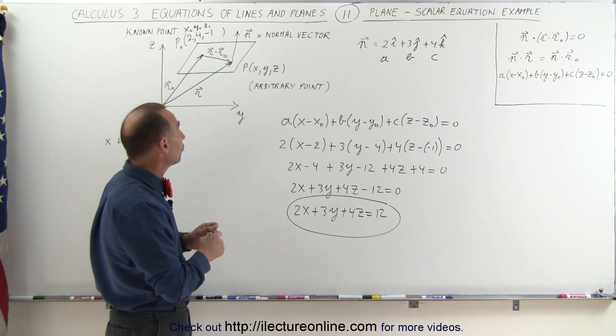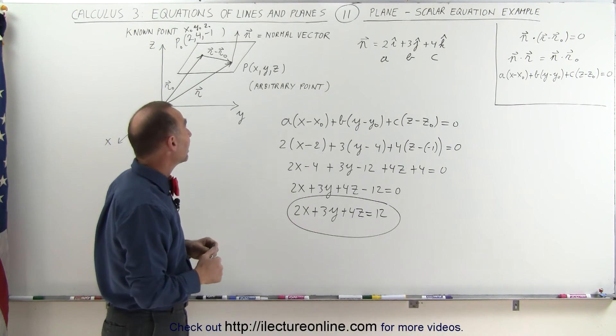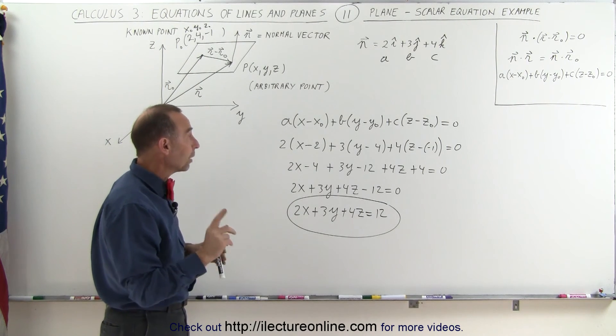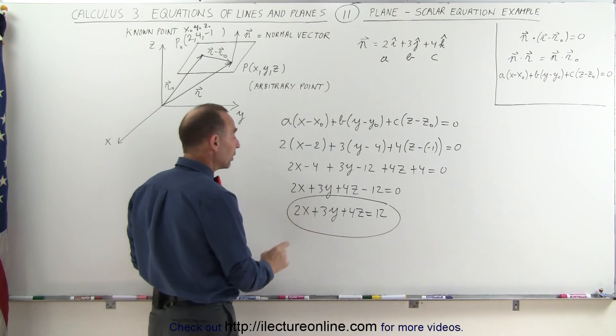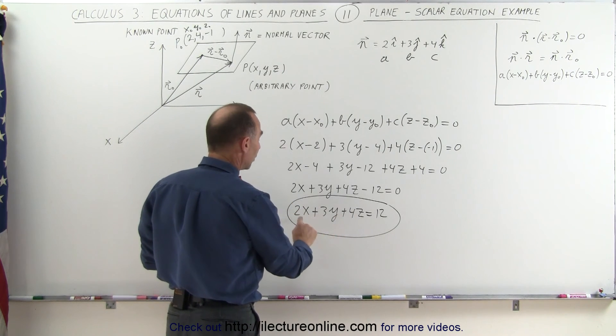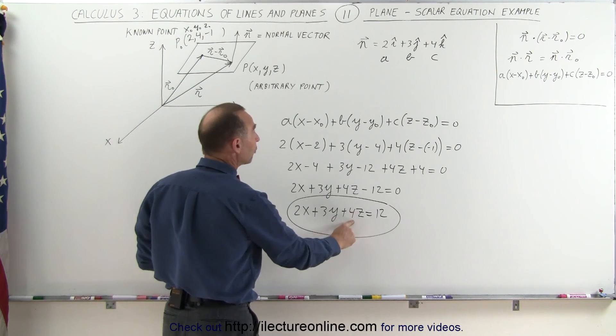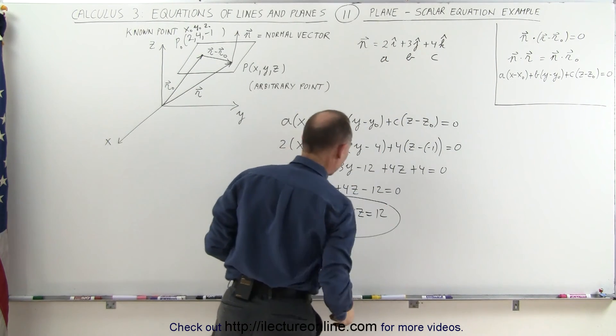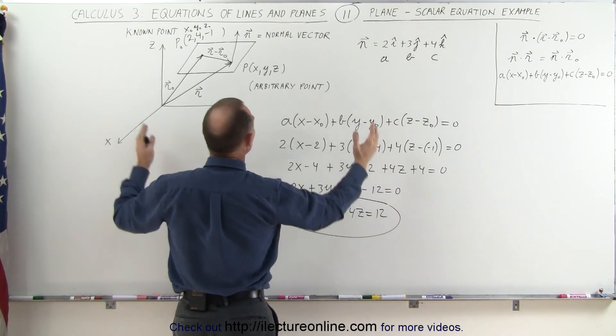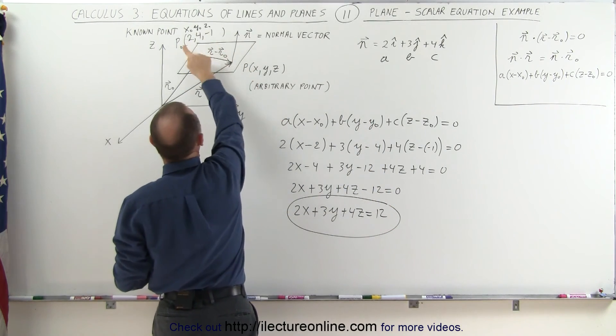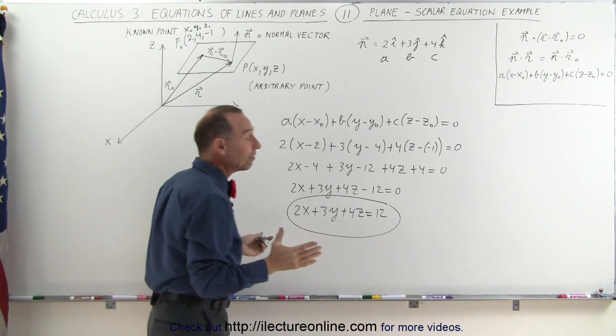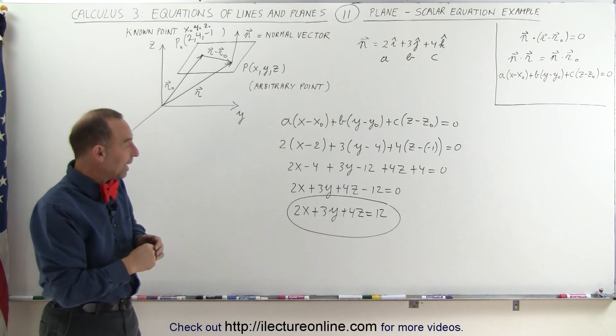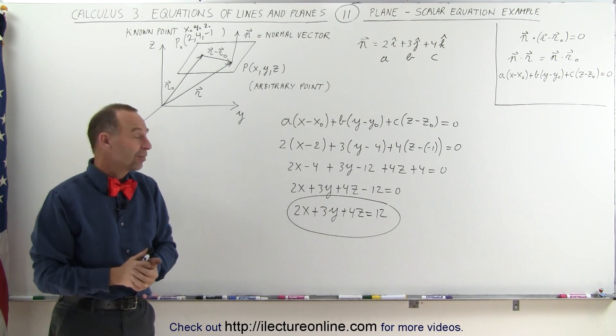That's simply the equation for the plane that we have here, for the example. Now notice that simply written, we have 2X plus 3Y plus 4Z. Notice that these 2, 3, and 4 are the coefficients or coordinates of our normal vector. And then 12 is the combined information that we get from the point that is known. That's how we find the scalar equation of a plane in three-dimensional space.